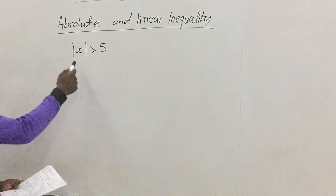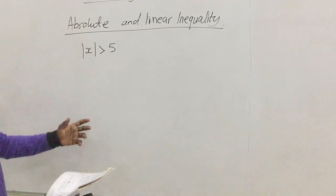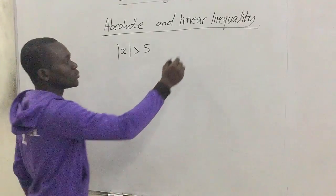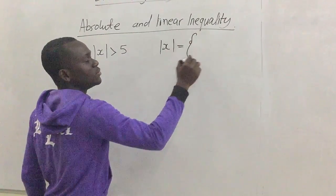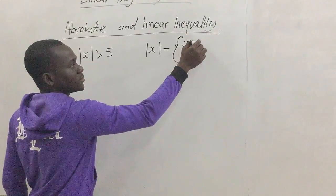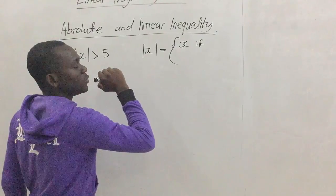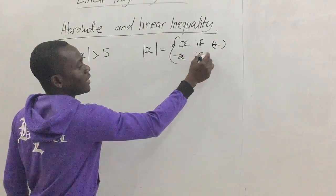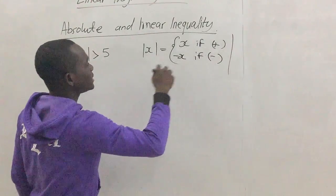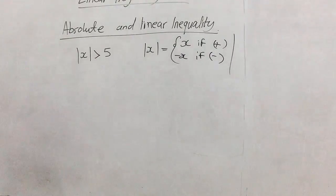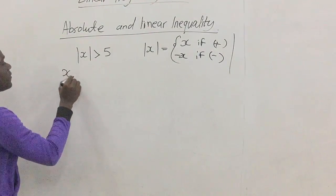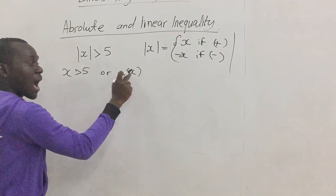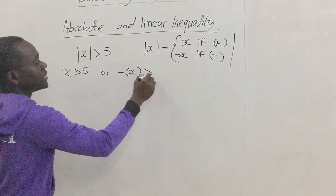Assuming you have been given an absolute value of x greater than 5 — find the solution set. Remember that when we say absolute x, it comes in two forms: x, if we have a positive value of x, or negative x if we have a negative value for x. With this in mind, we can work this absolute inequality. This simply means we have x greater than 5, or negative x greater than 5 if x has a negative value.